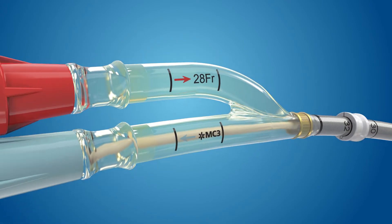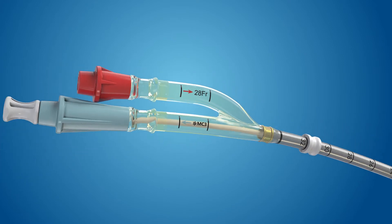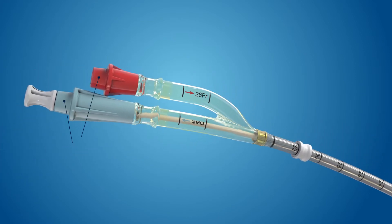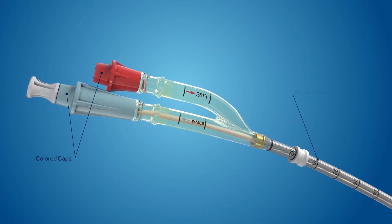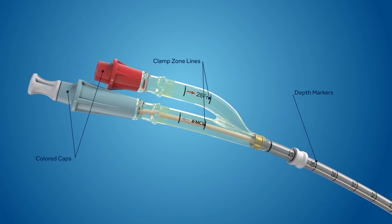The Crescent catheter has features to aid in use and handling, including colored caps that indicate the infusion versus drainage lumen, depth markers, and identifiable clamp zones.